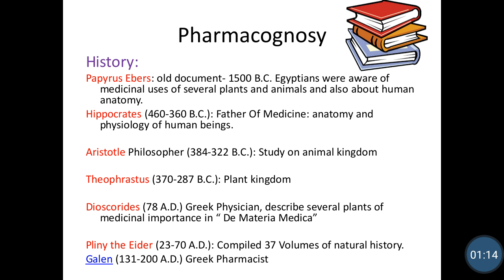First we start with the history of pharmacognosy. The substances from plant and animal sources have been used as food from ancient times. Later on, these substances were differentiated as foodstuff and therapeutic agents. Men tried to explore the utility of various substances obtained from natural sources, and in this way they discovered the drug. As mentioned in the Papyrus Ebers, an old document written in 1500 BC, it indicates that Egyptians were aware of medicinal uses of several plants and animals, and also about human anatomy.